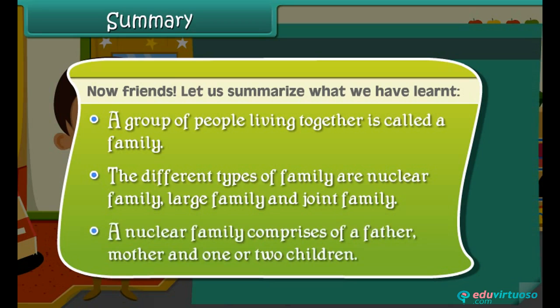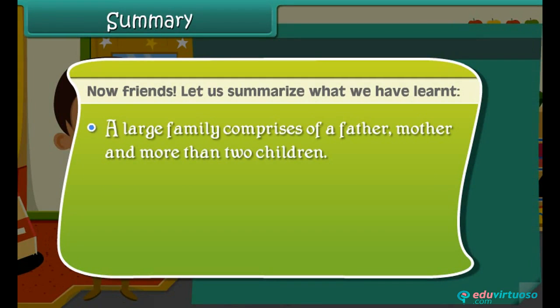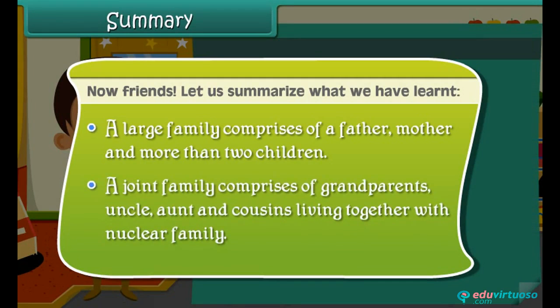A nuclear family comprises of a father, mother, and one or two children. A large family comprises of a father, mother, and more than two children. A joint family comprises of grandparents, uncle, aunt, and cousins living together with the nuclear family.